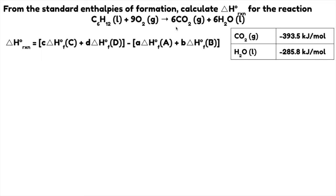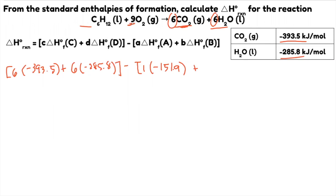So again, let's start with the product. This is 6. So I'll write 6 in front immediately. And CO2 is this one, negative 393.5 kilojoules plus the other product, 6. This is 6. And H2O is this one, 285.8 minus the reactant. This one is 1, right? 1 times the enthalpy of C6H12. What is it? Oh, it's not given, but you can check the internet. It should be negative 151.9 kilojoules per mole plus, this is 9, 9 times O2. O2 again is zero. So do the math. This will give you negative 3,924 kilojoules per mole.